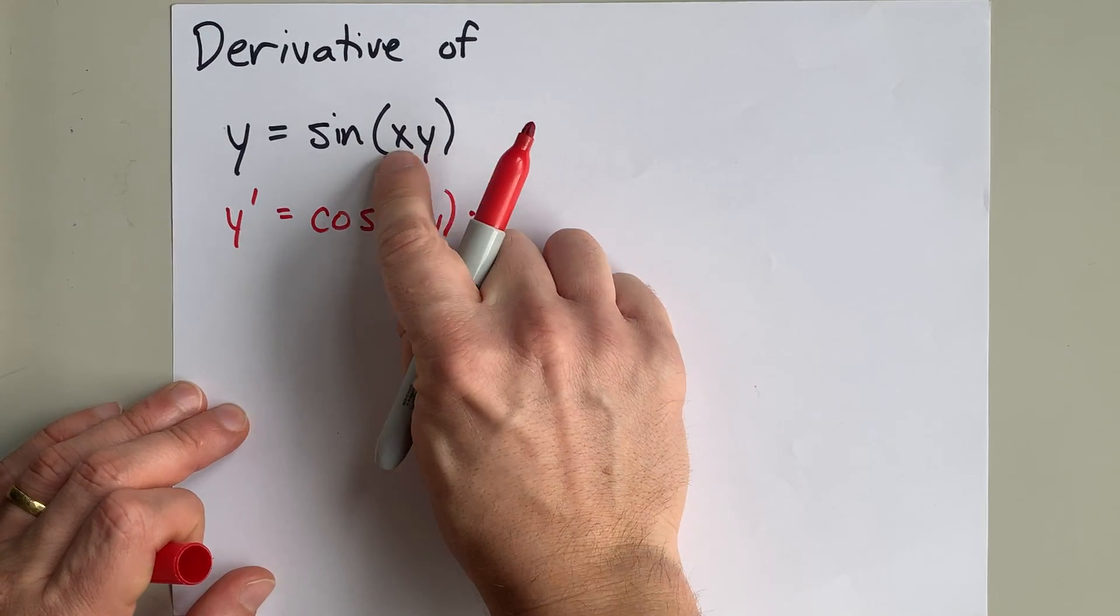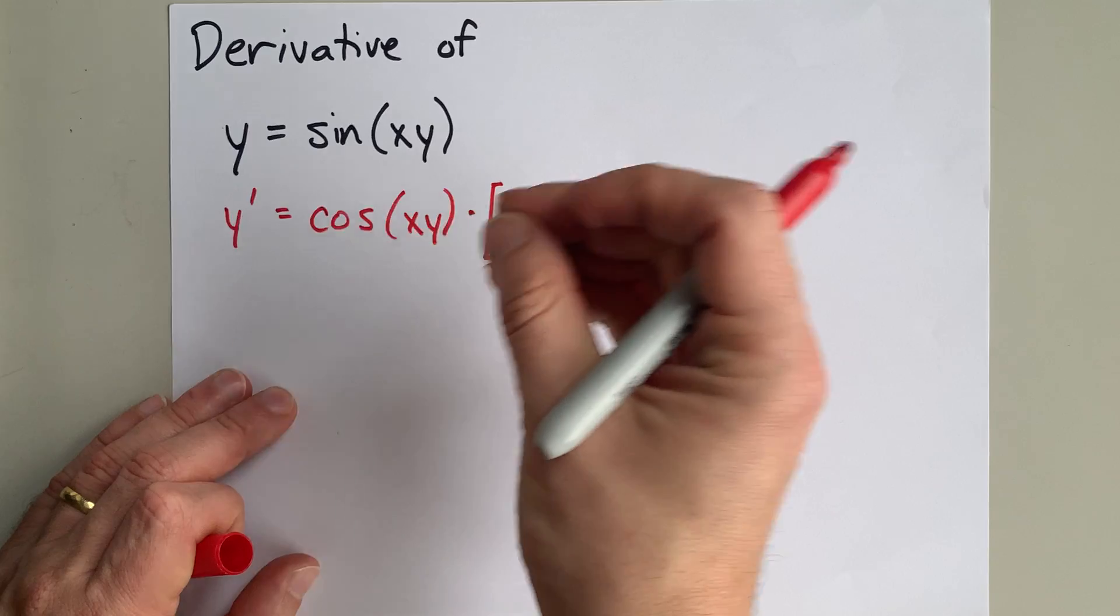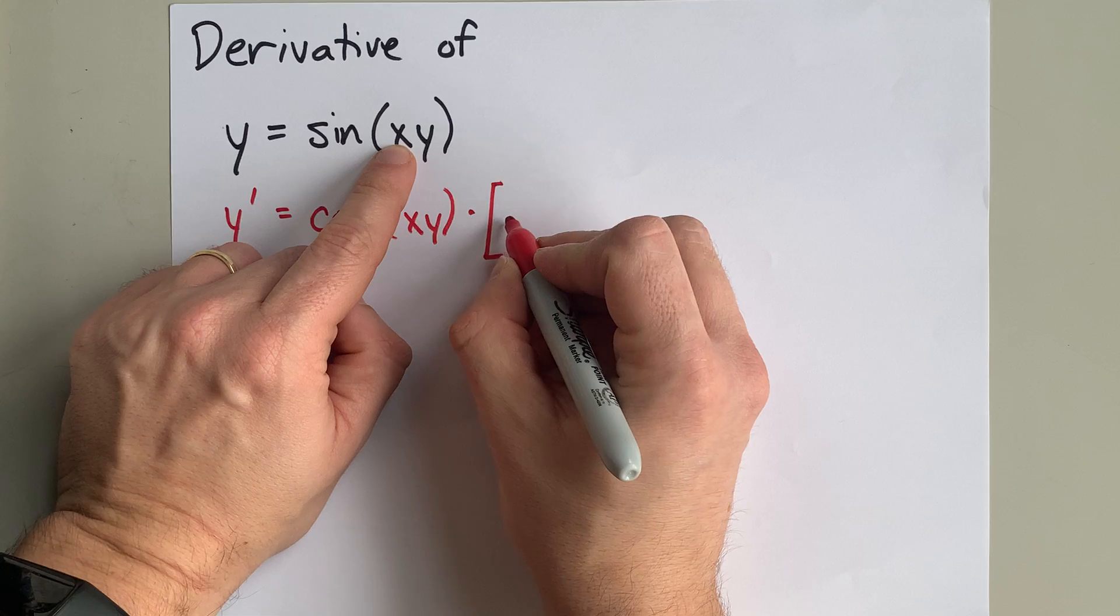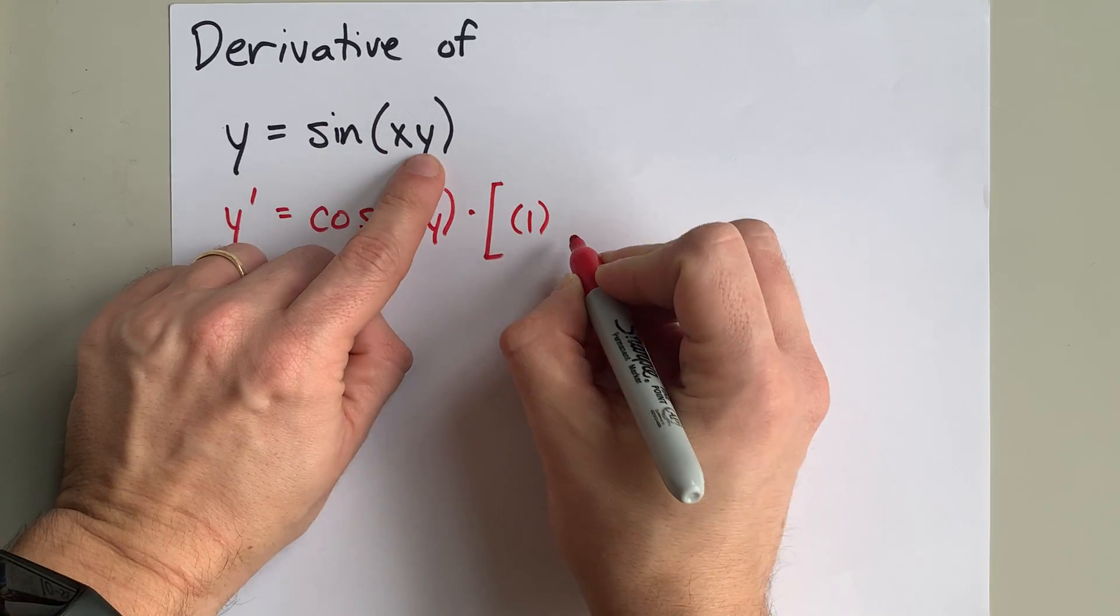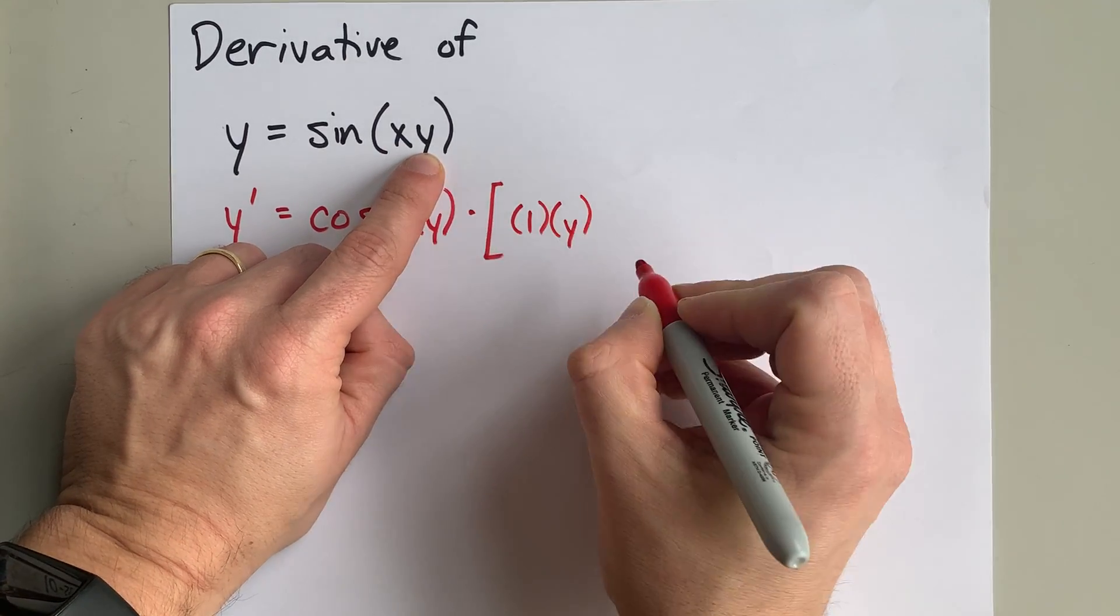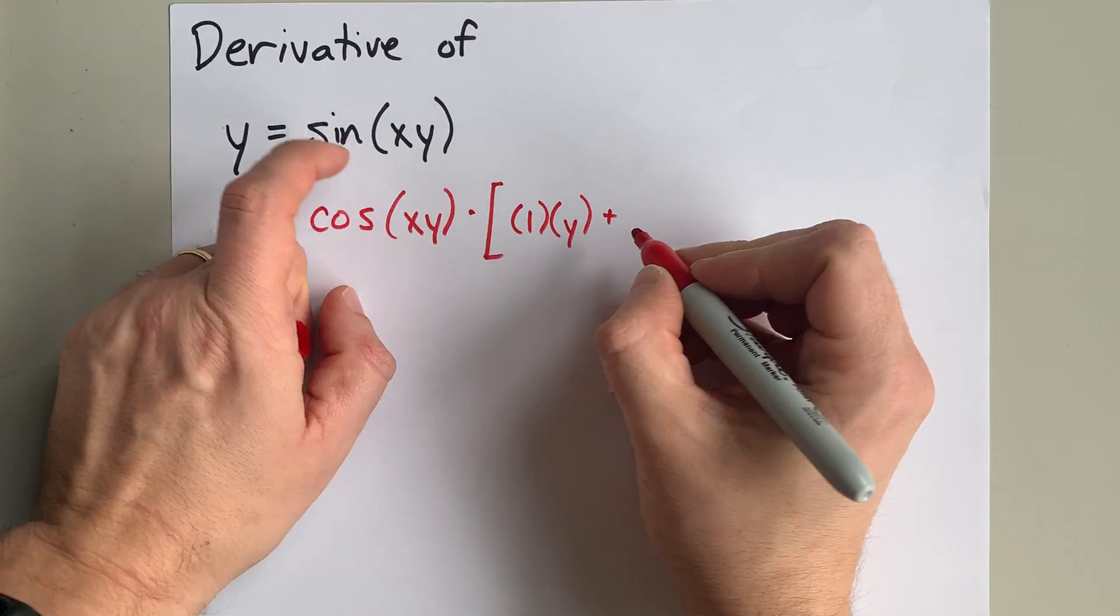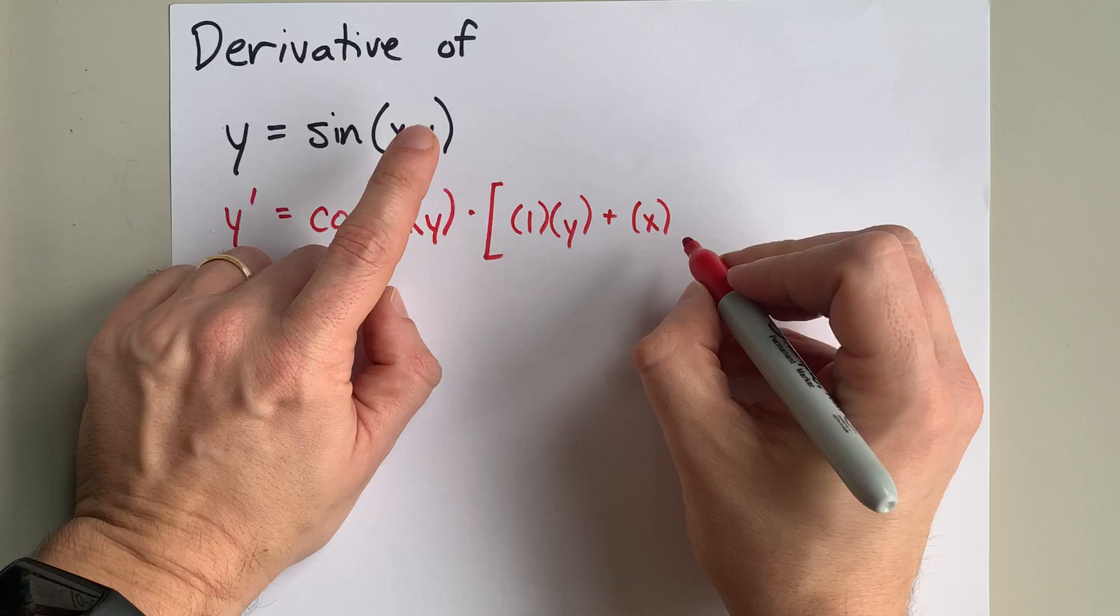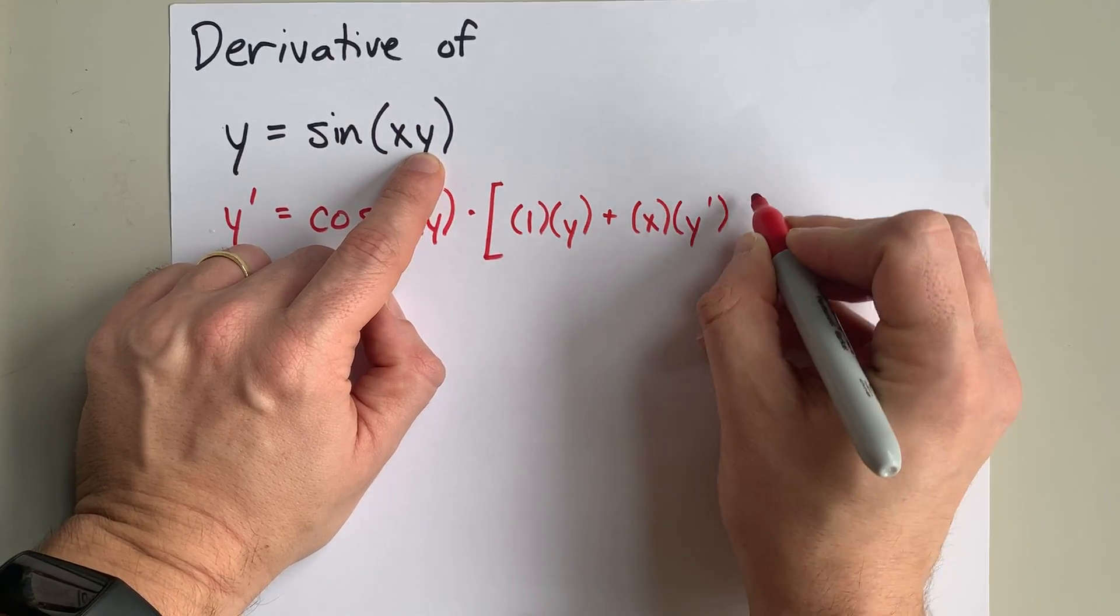And taking the derivative of x times y is going to be product rule. Product rule is the derivative of the first thing—derivative of x is 1—times the second thing as is, plus the first thing as is times the derivative of the second thing, which for me is going to be y prime.